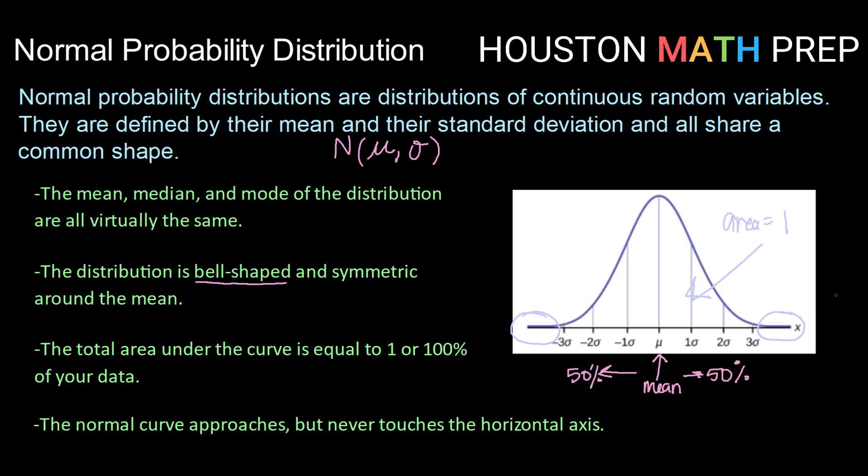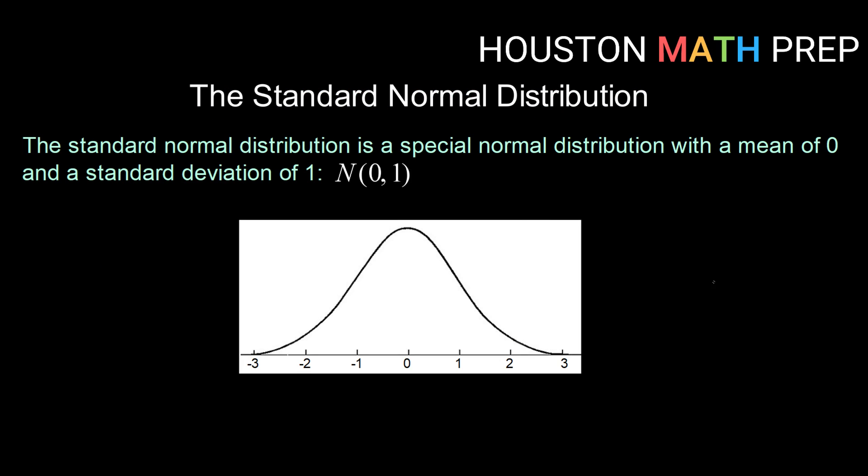So there are infinitely many of these types of distributions, these normal probability distributions. And if we're working with more than one at a time, it can be really helpful to standardize them and compare. So when we do that, we work with what we call the standard normal distribution.